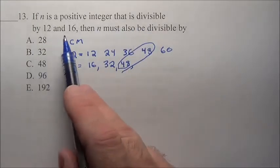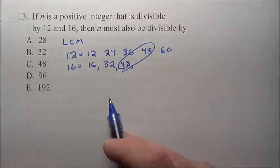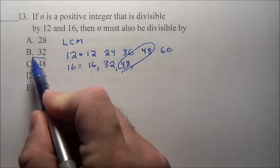We're looking for a positive integer that's divisible by these guys, it can also be divisible by 48 in this case. So notice that's choice C.